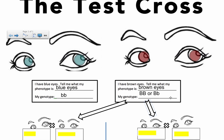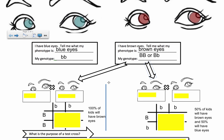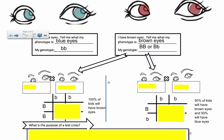In an ideal world, you would make this person with an unknown genotype have babies with someone who has a known genotype. If they have blue eyes, then they must be little b, little b. So I do the cross, and these are the possible outcomes that I might predict.